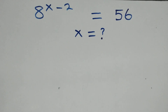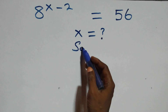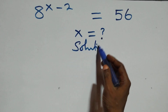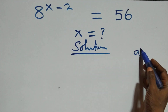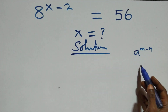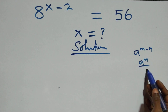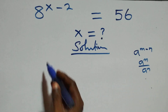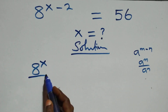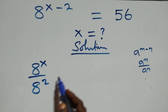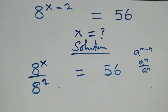Hello, you are welcome. How to solve this nice exponential equation. This follows when we have a raised to power n minus n, which is the same thing as a raised to power n over a raised to power n. What we have becomes 8 raised to power x over 8 squared equals 56.